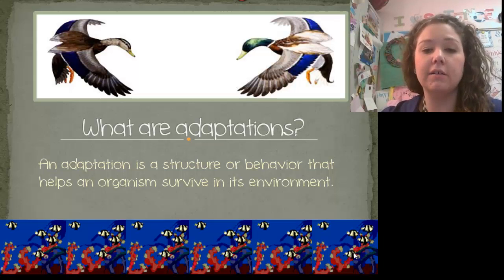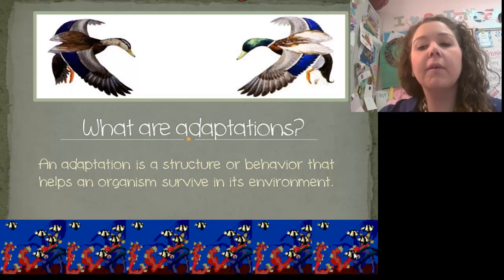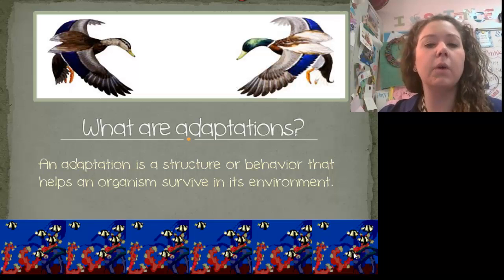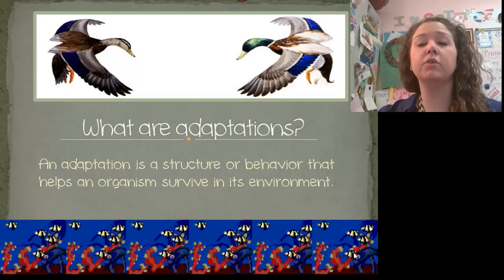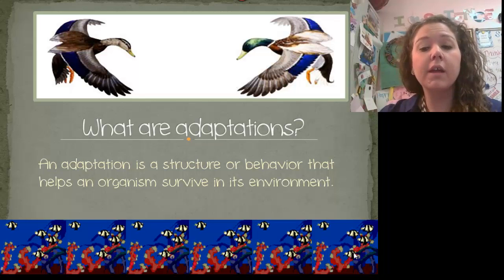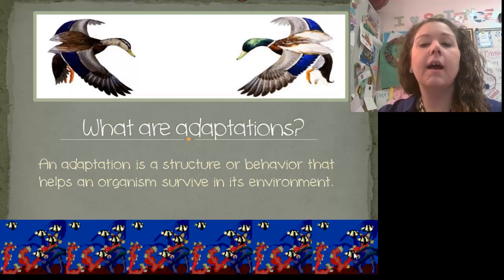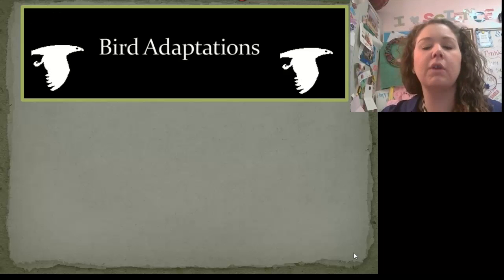An adaptation is a structure or a behavior that helps an organism to survive in its environment. A fish is built to swim in the water — other organisms can't survive there. A duck's webbed feet help it survive in its environment. A structure is like a body part, like webbed feet. A behavior would be like an action — some organisms hibernate or migrate, and that's a behavior.